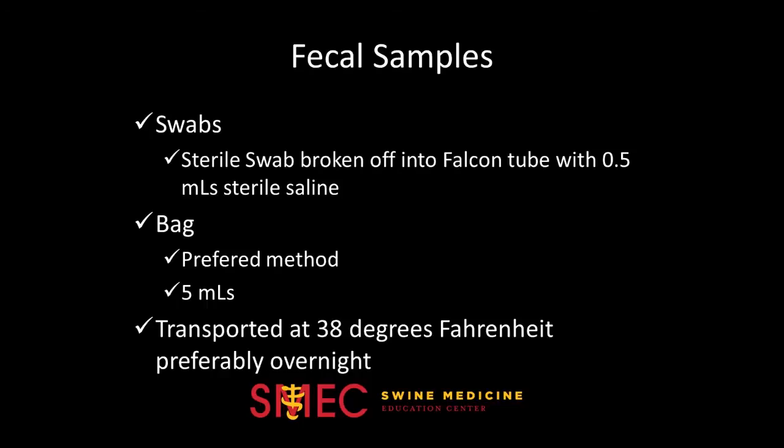Fecal samples can either be collected with a swab or collected in a bag. Diagnosticians prefer samples collected in a bag simply because they have more content to work with. When collecting with a swab, it is much like a nasal swab and should be broken off into a falcon tube with 0.5 milliliters of sterile saline. If collected in a bag, you should try to include at least 5 milliliters of feces. It is preferable to take samples directly from a pig and not from the slats, because feces on the slats can be contaminated with different bacteria.